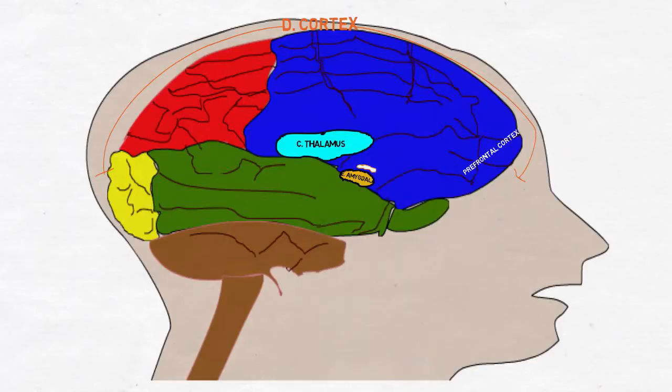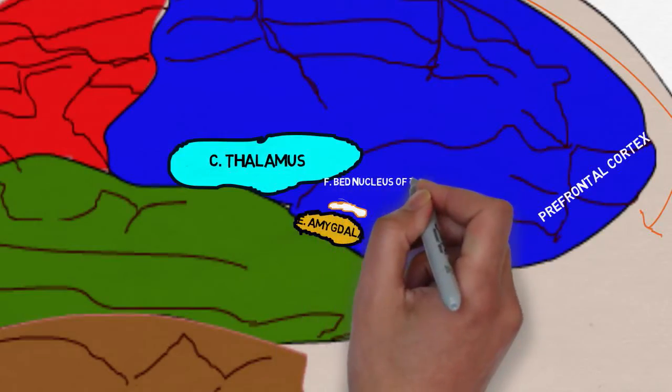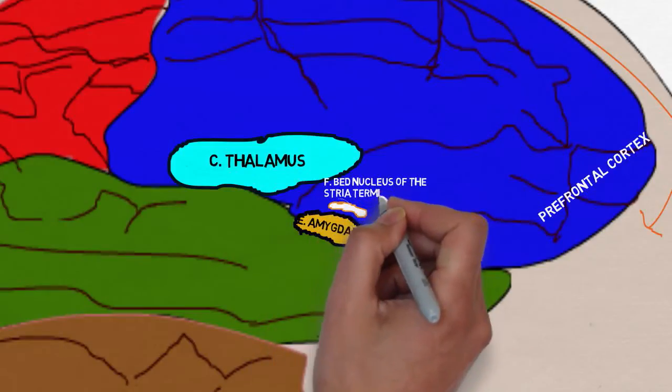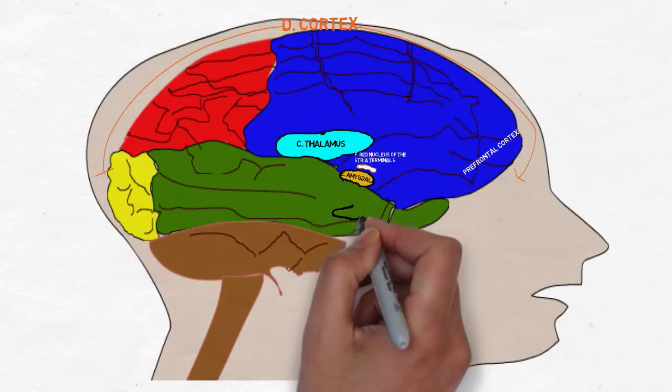The bed nucleus of the stria terminals is particularly interesting when we discuss anxiety. While the amygdala sets off an immediate burst of fear, the BNST perpetuates the fear response, causing longer-term unease typical of anxiety.